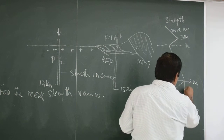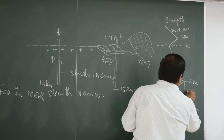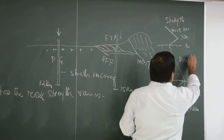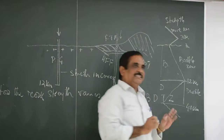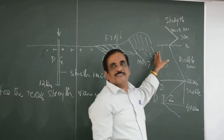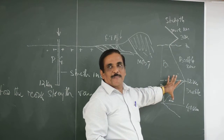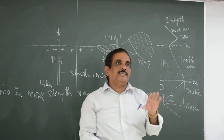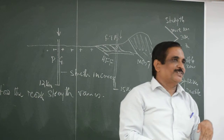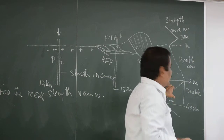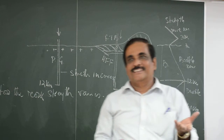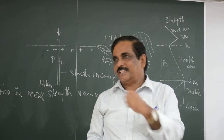This zone — 12 kilometers to 40 kilometers — is a ductile zone. The upper zone is a brittle zone. This is how these zones are different. The material here is ductile. This is a ductile layer at the base of 12 kilometers, till the base of the crust. Once the mantle starts, again it becomes brittle and strength increases.